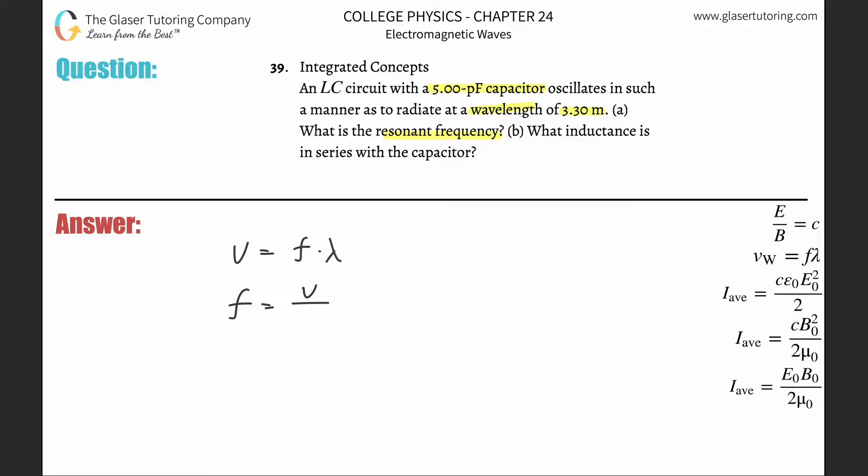The velocity of the wave is the speed of light, right? Divided by the wavelength here. So the wavelength is 3.3 meters, so the resonant frequency is simply going to be... Now we'll do 3 times 10 to the 8 divided by 3.3, so this is 9.09 times...